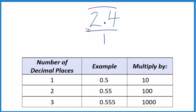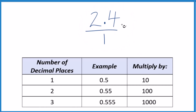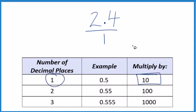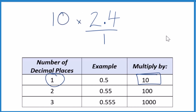What I'd like to do is get this 2.4 to be a whole number. And I can see I have one decimal place here. So with one decimal place, I could just multiply that numerator by 10, and that would give me a whole number. So 10 times 2.4 equals 24.